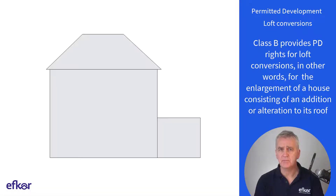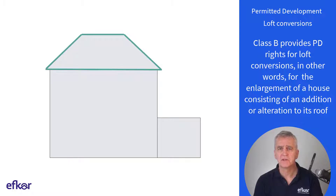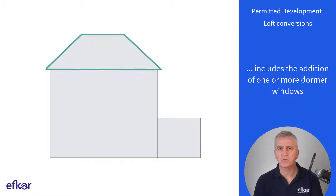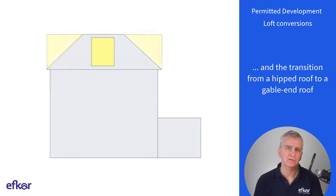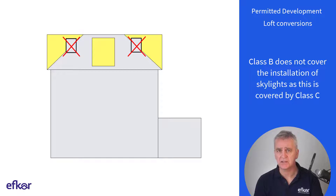Class B provides PD rights for loft conversions — in other words, for the enlargement of a house consisting of an addition or alteration to its roof. This includes the addition of one or more dormer windows and the transition from a hipped roof to a gable end roof. Class B does not cover the installation of skylights, as this is covered by Class C.